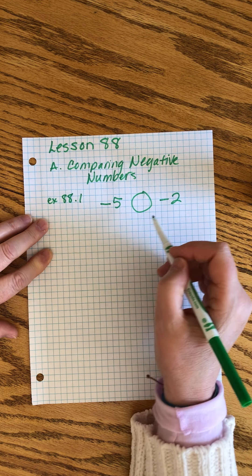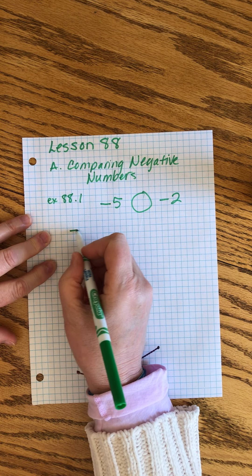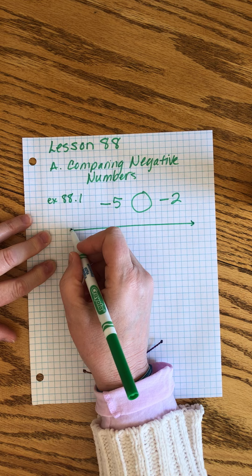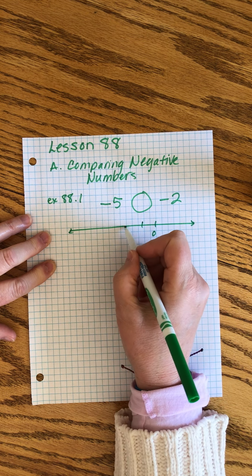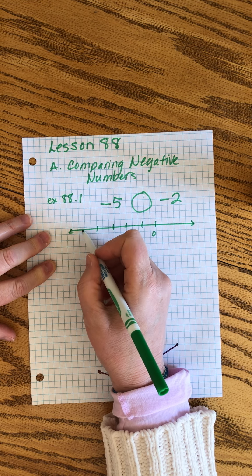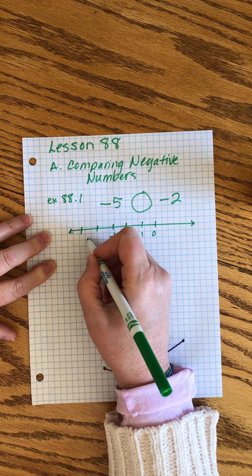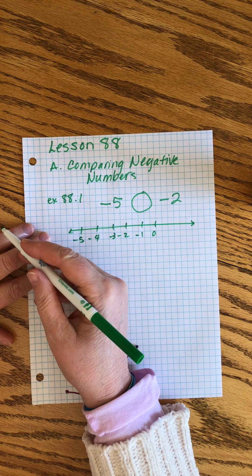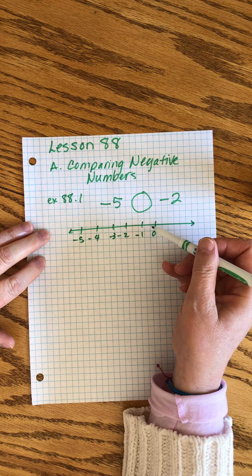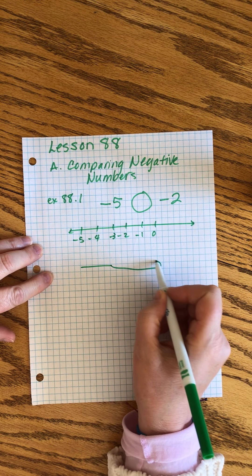But in negative land everything's backwards. Sometimes it's helpful to look at a number line. I'll put zero here, we're in the negatives: negative 1, negative 2, negative 3, negative 4, negative 5. The further we go to the left, the smaller the numbers get.